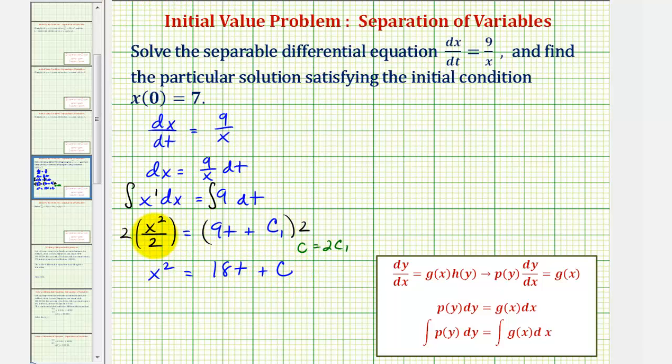And now to solve for x, we would square root both sides of the equation. And in most cases we'd have a plus or minus here on the right. So we would have x equals plus or minus the square root of 18t plus c.